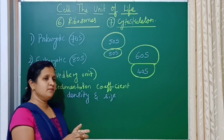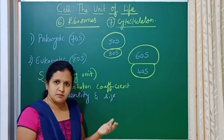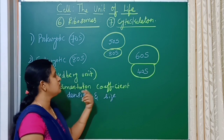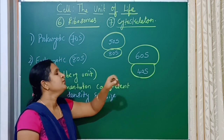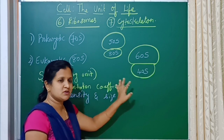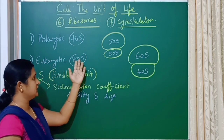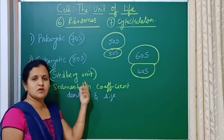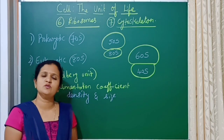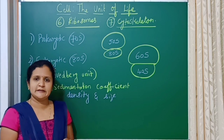Similarly, when eukaryotic ribosomes were centrifuged, the larger unit's sedimentation-based density was 60S and the smaller unit's was 40S. Together the complete ribosome sedimented at 80S, and hence it is called 80S. So ribosomes in prokaryotes are 70S and in eukaryotes are 80S.